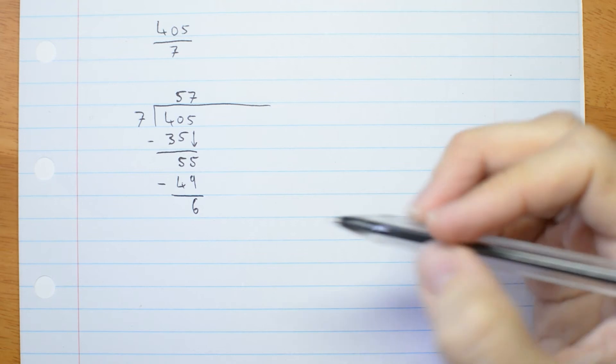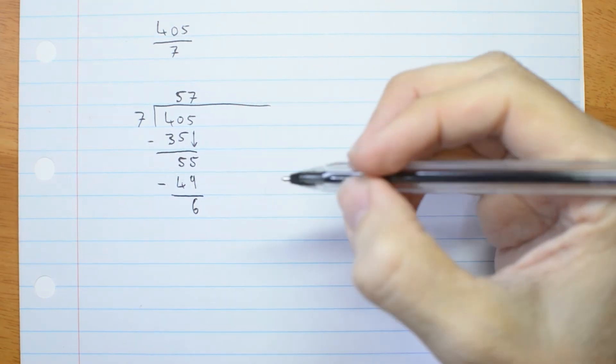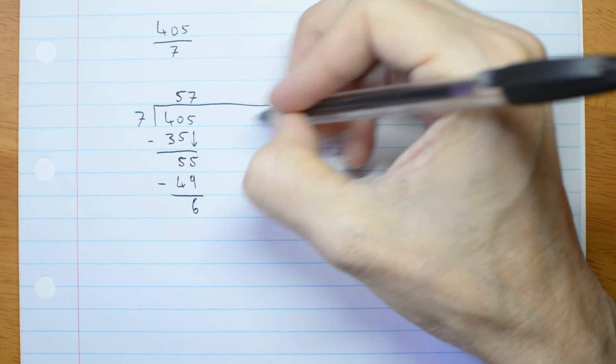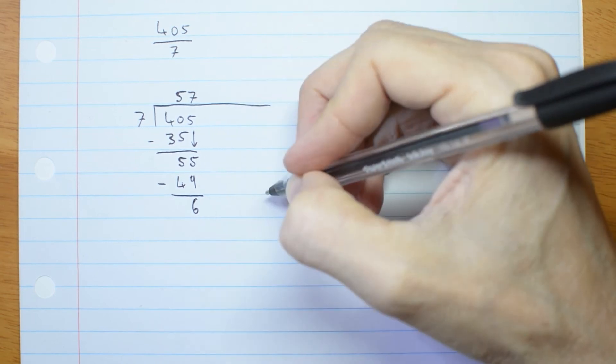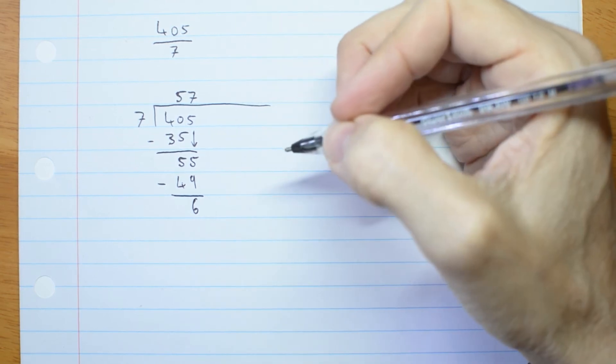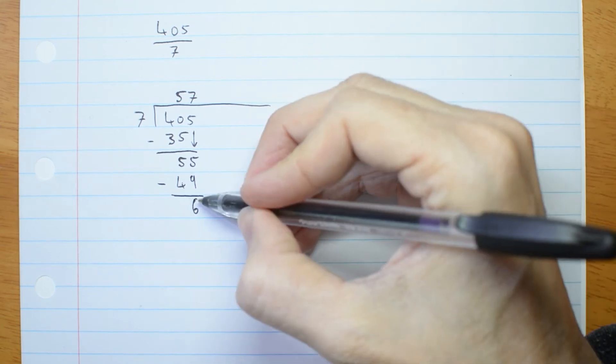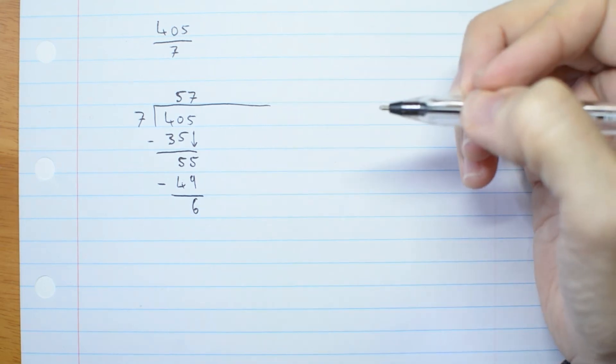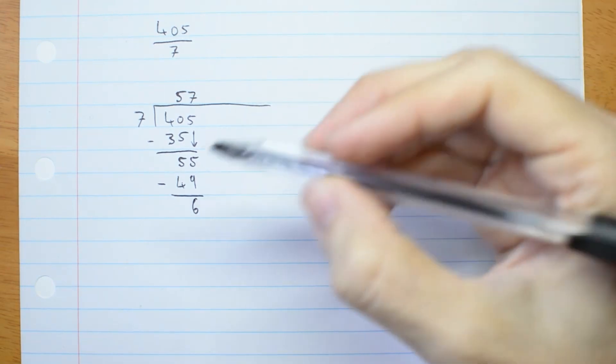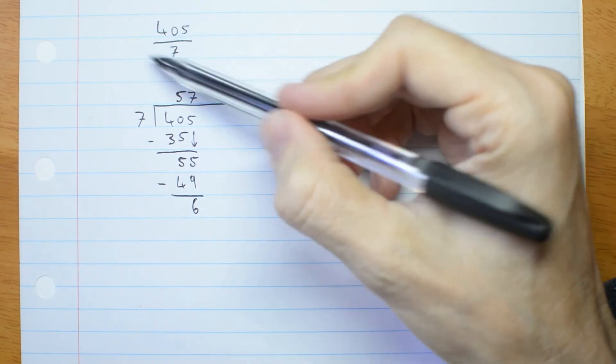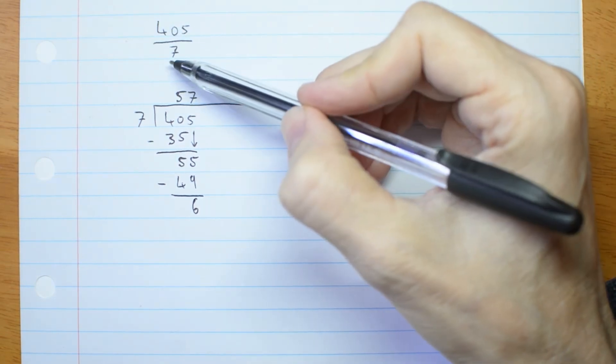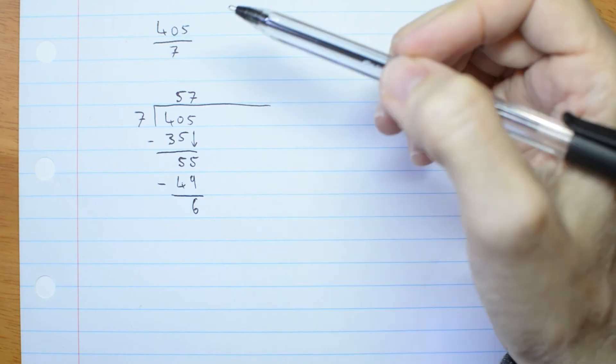Now, if I was actually doing numbers and wanted decimal expansion, I could put a decimal point here and write some more zeros and just keep taking them down. But for polynomial division, I'm more interested in the remainder itself. So what I want to do is write my division up here in terms of quotient and remainder.